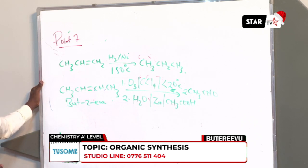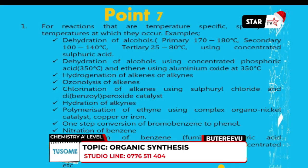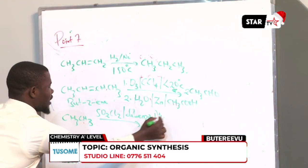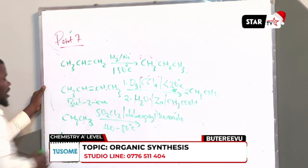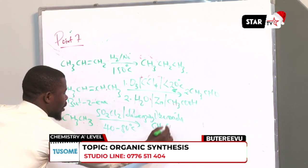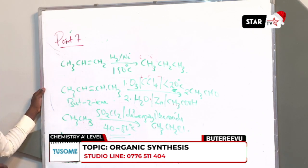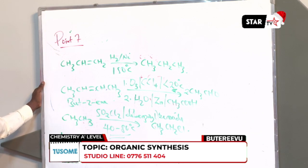The other temperature-specific reaction involves chlorination of alkanes using sulfuryl chloride. If you are chlorinating alkanes — for example, you're chlorinating ethane — you shall use sulfuryl chloride in the presence of a reagent called dibenzoyl peroxide. This reaction requires a temperature between 40 to 80 degrees Celsius, so it is also a temperature-specific reaction.